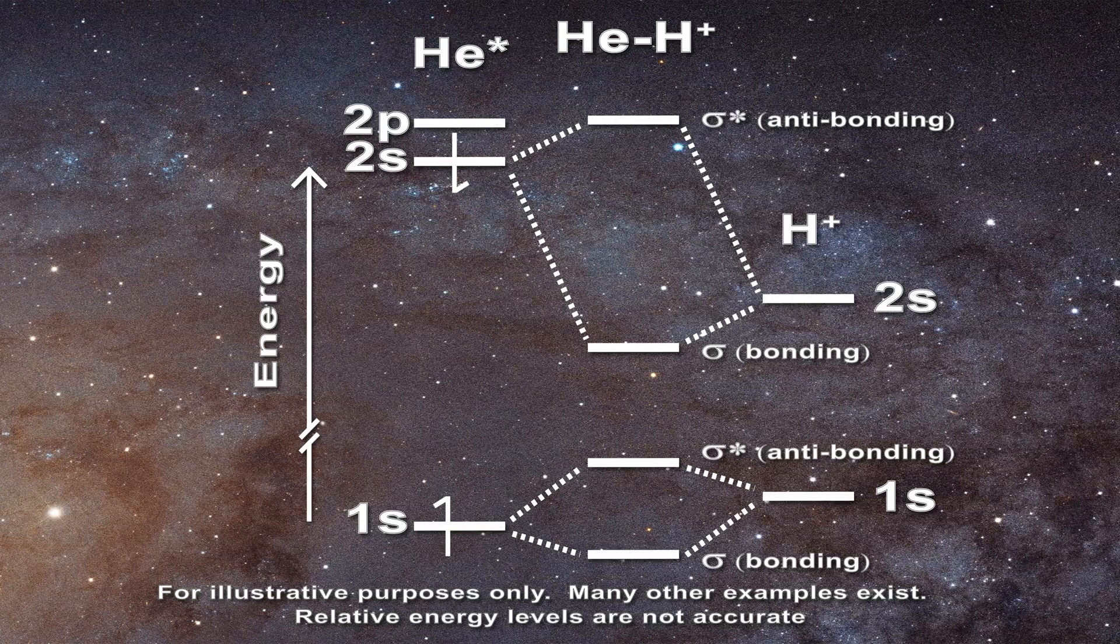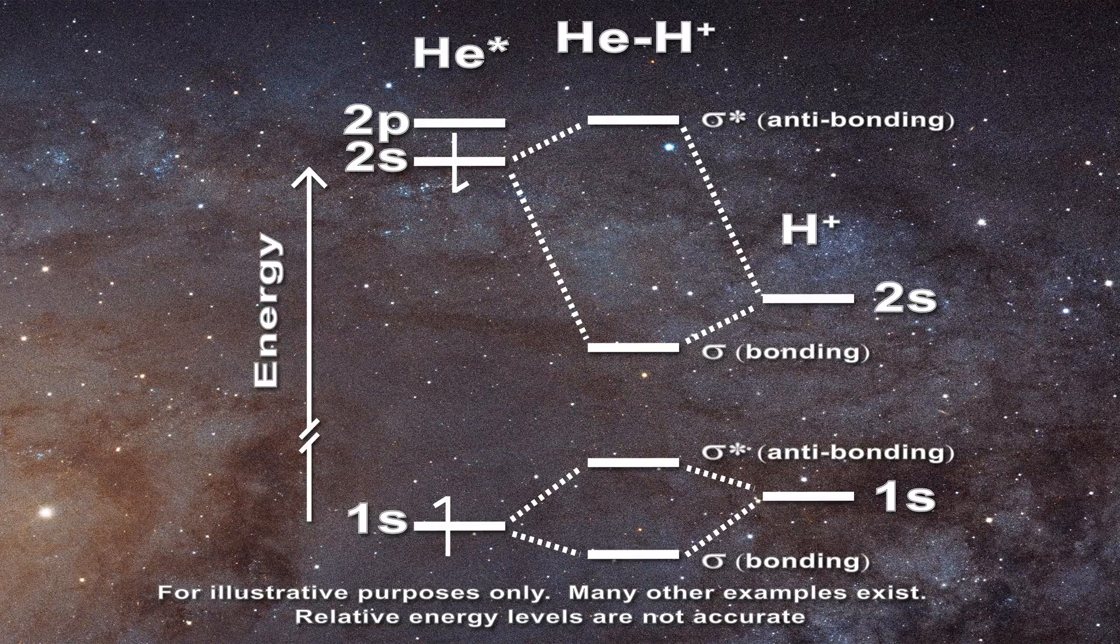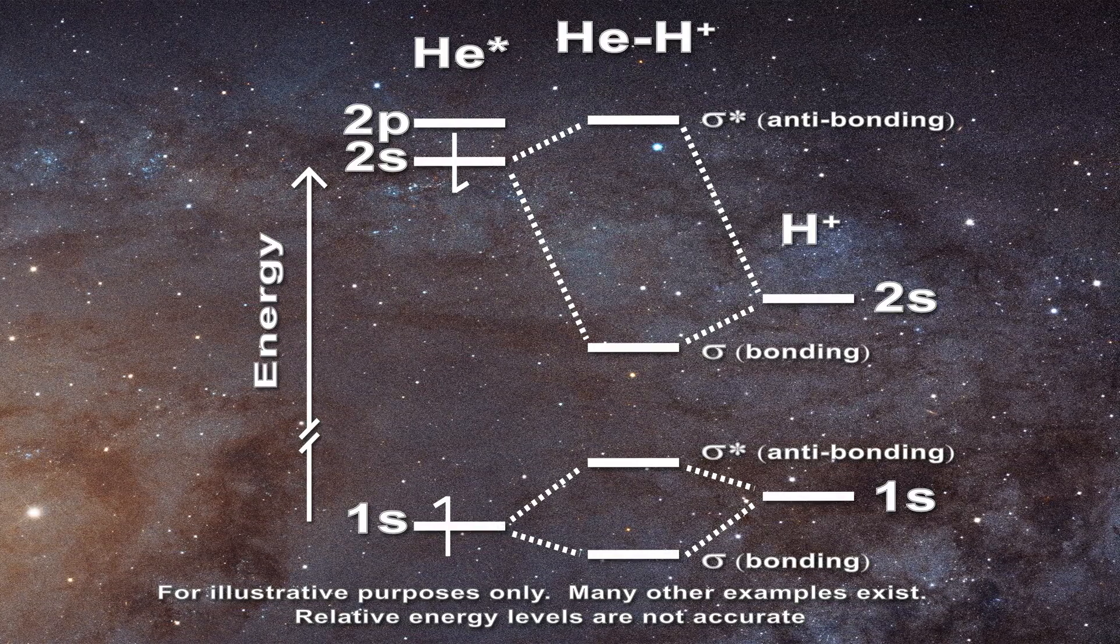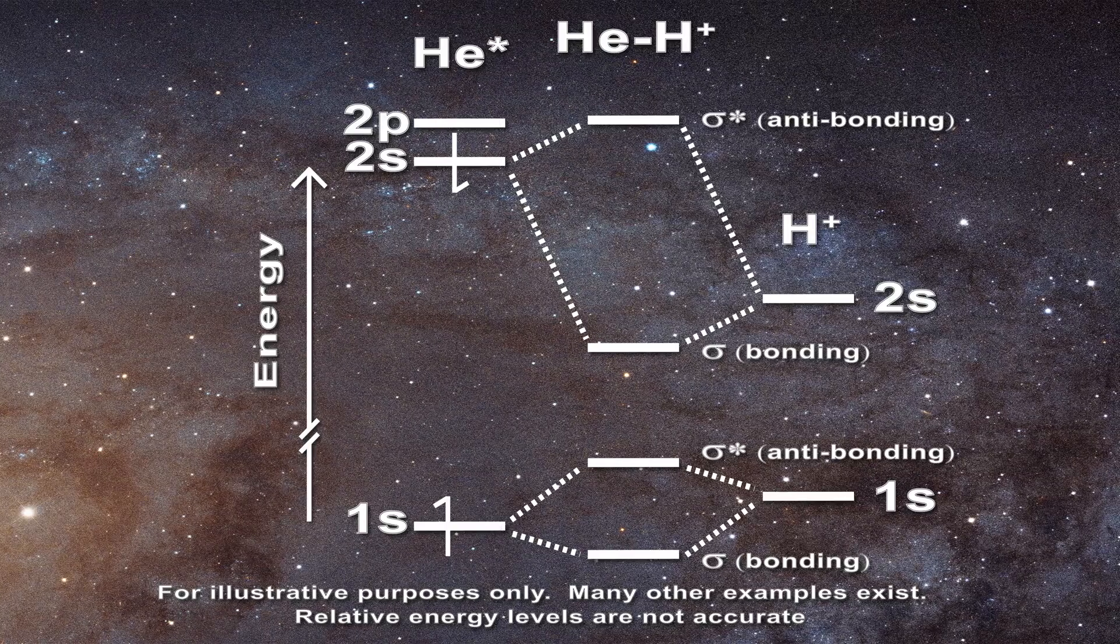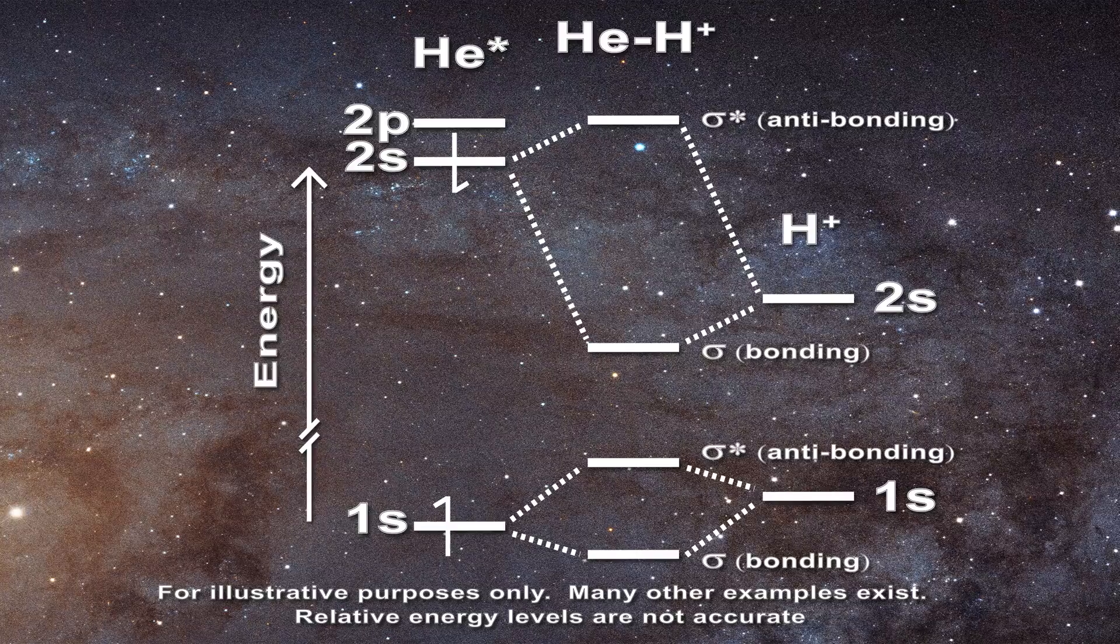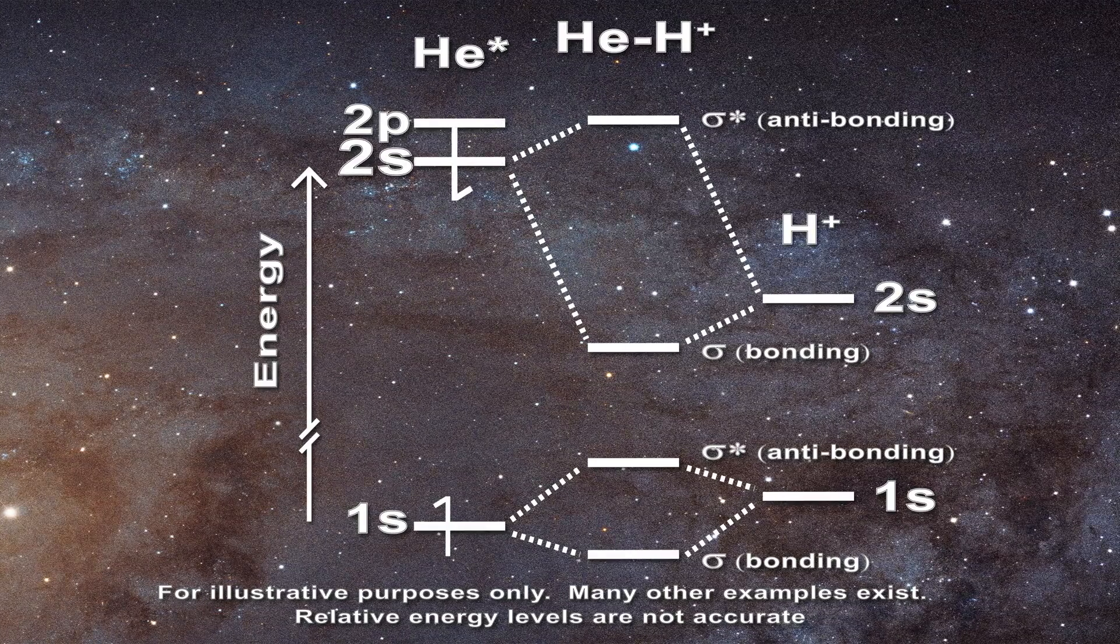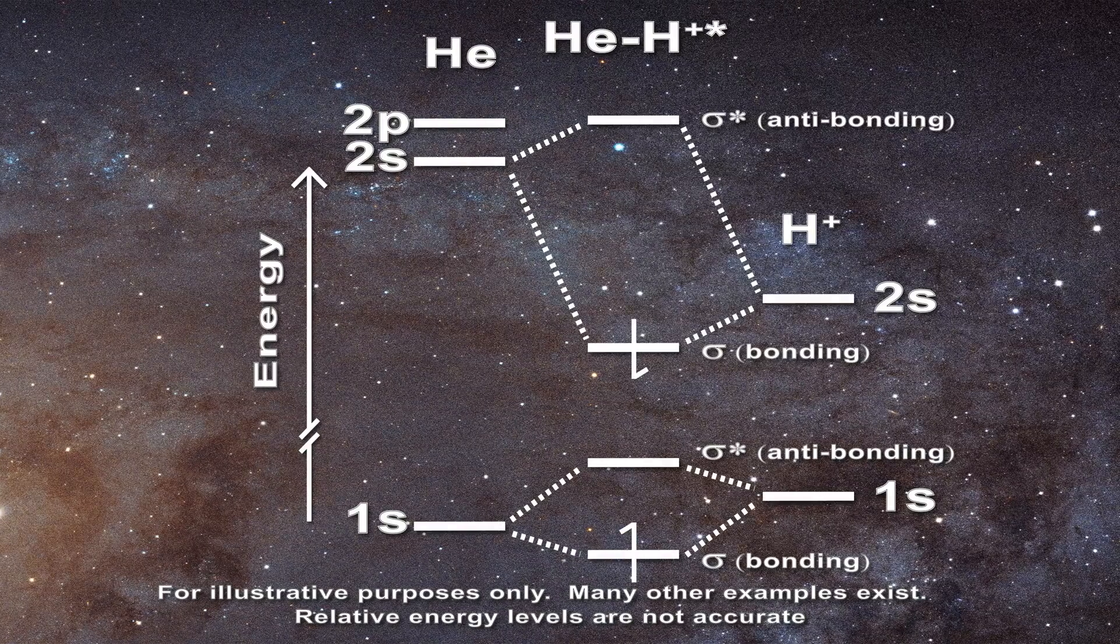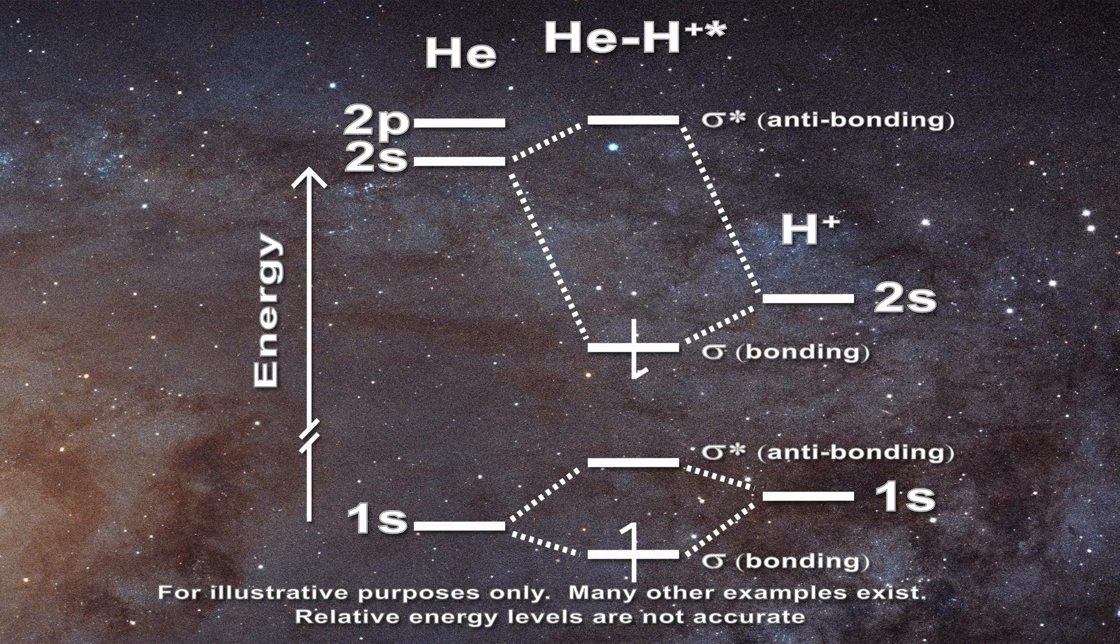In the end the mere charge on a proton can help facilitate this process as can collisional energy. At this point helium would have one of its electrons in the 1s shell and one excited electron in 2s. The proton can then make two sigma bonds with the helium atom each with the 0.5 bond order.